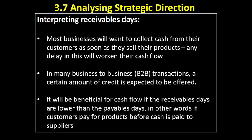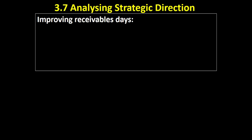It should also be noted that different types of businesses will need to offer different levels of credit. For example, when you go to the supermarket you buy your food there and then — you're not going to buy it on credit — whereas if you buy a car, a fridge, or a sofa, you would expect some form of credit to be offered. So the interpretation does depend on the industry. You also want to see what's happening over time: is the organisation getting better at collecting debts, or is it actually getting worse?